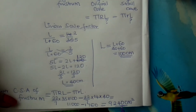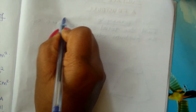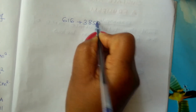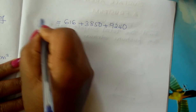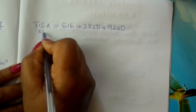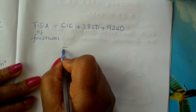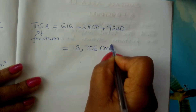Therefore, you now need to get the total surface area by adding up all three. The area of the top circle was 616, the area of the bottom circle was 3,850, and the area of the curved surface is 9,240. Adding these three together, the total surface area of the frustum is 13,706 centimeters squared.